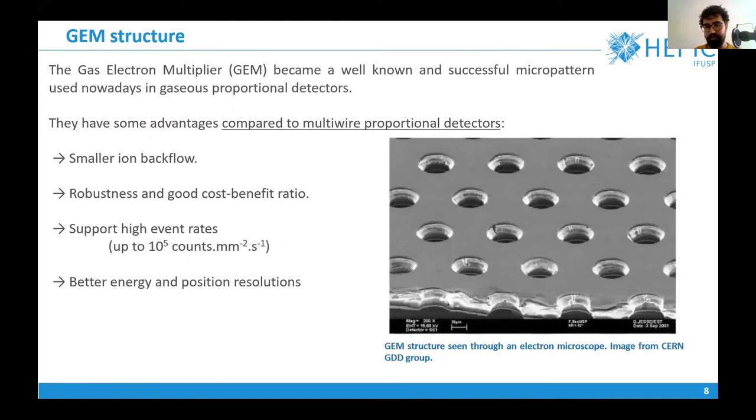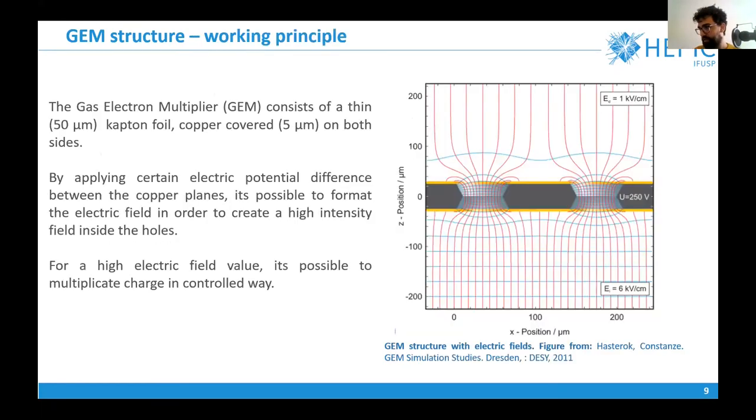We are building a gas detector and we use the GEM structure. As Tiago already said, the gas electron multiplier is a very well-known micro pattern used nowadays. It has some advantages compared for instance to the classic multi-wire proportional detectors such as smaller ion backflow, good cost-benefit ratio.